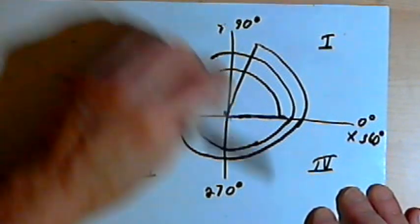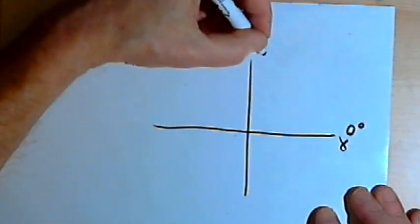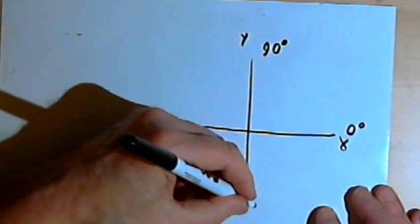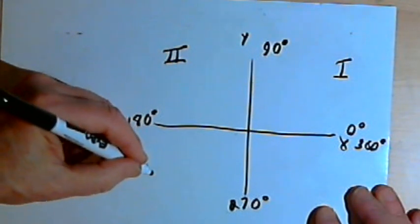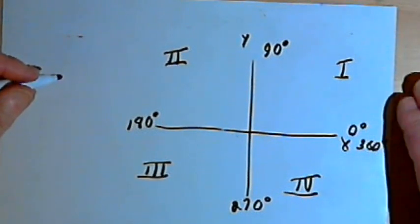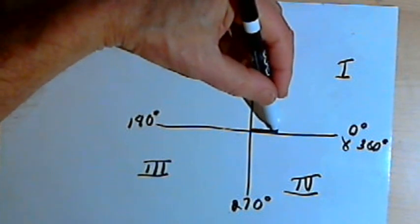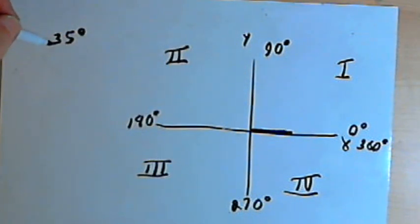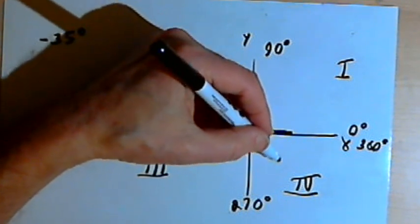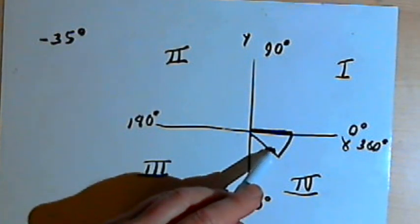We can also have negative angles. So once again I'm going to draw that coordinate plane — the x-axis, the y-axis — and label the quadrants. Let's say we want an angle of negative 35 degrees. This is going to start in standard position on the positive side of the x-axis, but instead of going counterclockwise, it's going to go clockwise. Anywhere up until negative 90 degrees stays in the fourth quadrant, so we just go negative 35 degrees, and that gives us a sketch of our angle.